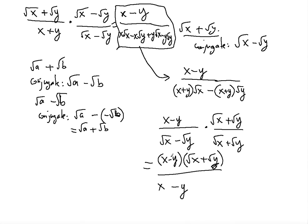Notice that (x − y) is in the numerator and also in the denominator. Since (x − y) is a factor that is multiplied, we can cancel it with the denominator because it is the same factor.